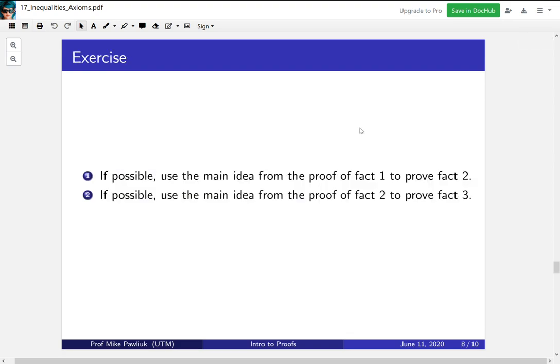Another exercise for you is, if possible, use the main idea from the proof of fact one to prove fact two, and if possible use the main idea from the proof of fact two to prove fact one. Sorry about that. So use the main proof idea of one of them to prove the other. And for your information, one of the two things I'm asking you to do will be impossible. But that's kind of the point, is that one of them you'll be able to use a different proof technique, but the other one you won't be able to.